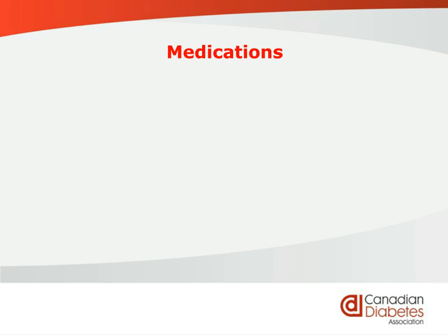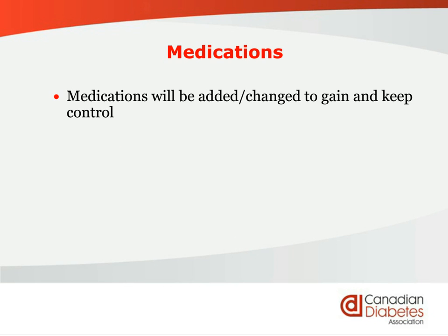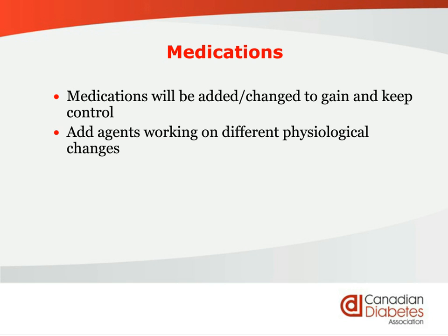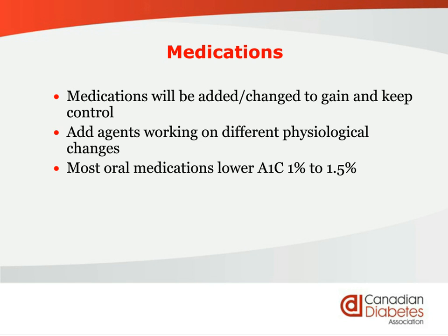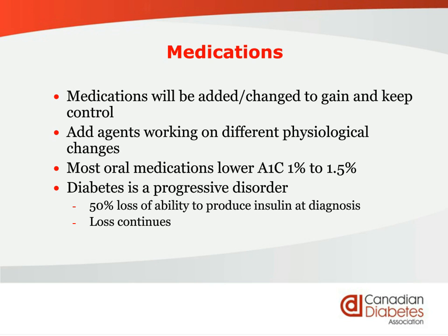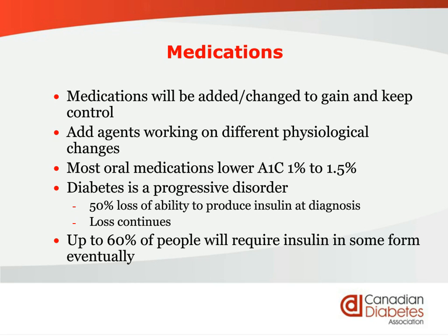Medications are going to change all the time. They can be added and changed to gain and keep control. You may end up with 4 or 5 medications, or maybe 2 work for you — it's all individualized. Usually agents are added that work on a different system in your body. Almost every single oral medication lowers the A1C by 1 to 1.5%. Because diabetes is a progressive disorder, almost up to 60% of people with type 2 diabetes will eventually require insulin in some form, even if it's just once a day at bedtime.